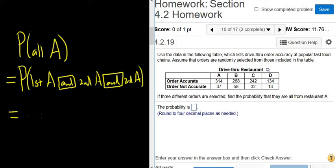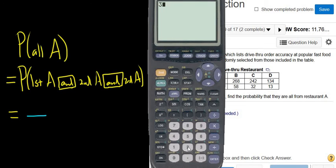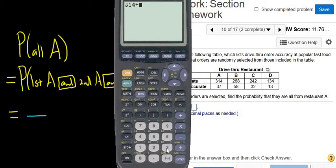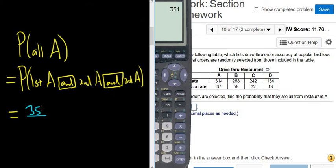So it's a fraction and it's going to be the number of ways to pick an order from restaurant A divided by the number of ways to pick an order. So to figure out restaurant A, you just go to A and you add these all up. So let's do that. So it would be 314 plus 37. So 351 ways to pick an order from restaurant A.